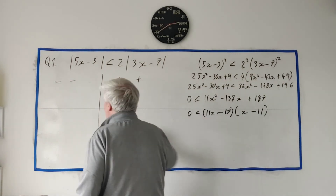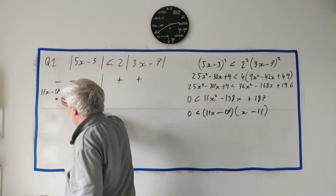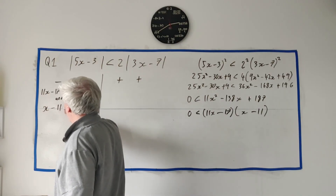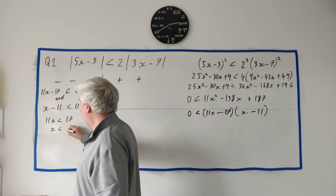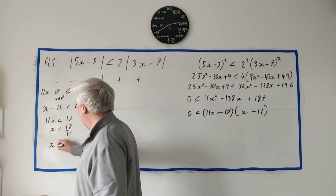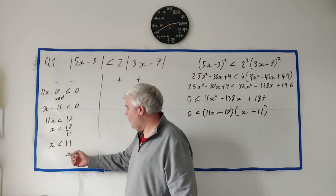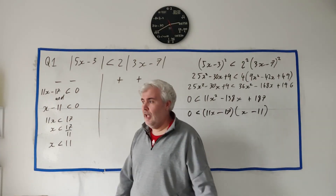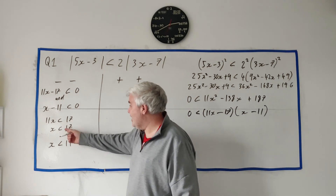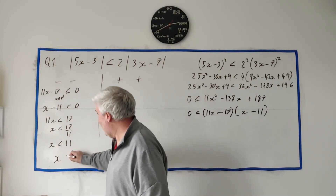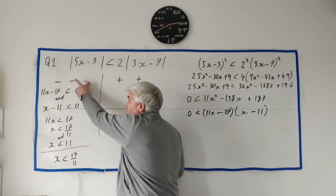For the first case (both negative): 11x minus 17 less than 0 gives x less than 17 over 11, and x minus 11 less than 0 gives x less than 11. Both must be true simultaneously. For example, x equals 12 isn't less than 11, so it fails. x equals 8 is less than 11 but not less than about 1.5. So we need x less than 17 over 11 for both conditions to hold.